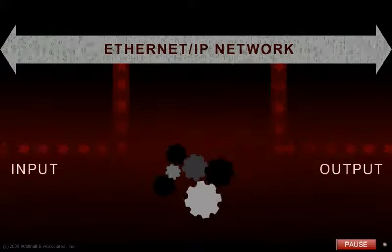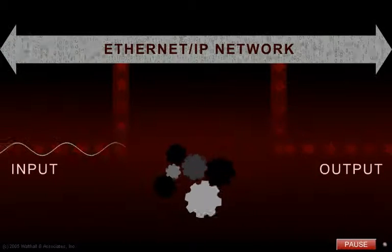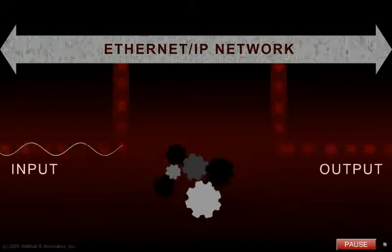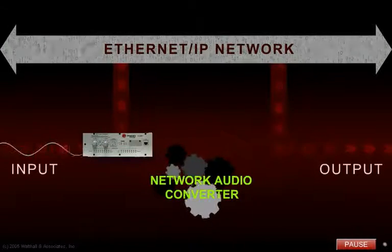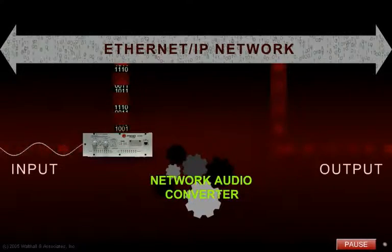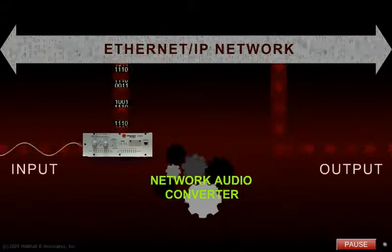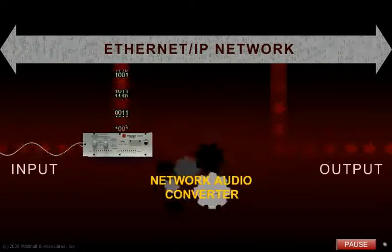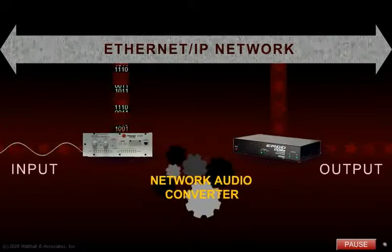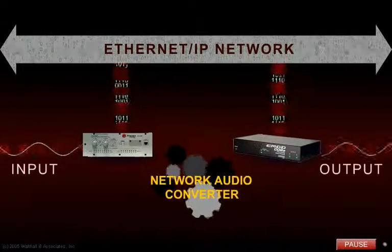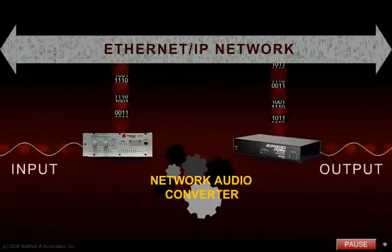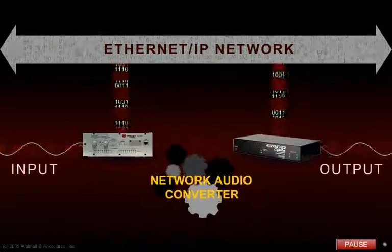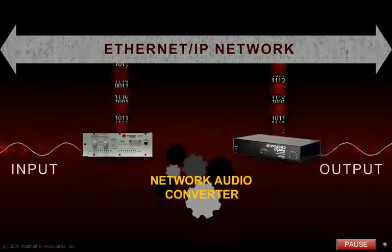This is accomplished by sending an analog or digital audio signal into a network audio converter that converts the signal into data packets that can be routed over a network. Another network audio converter on the network converts the data packets back into an analog or digital signal, which can then be routed to an amplifier or powered loudspeaker.